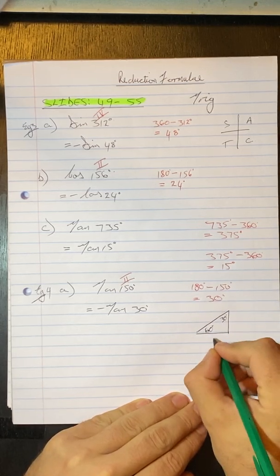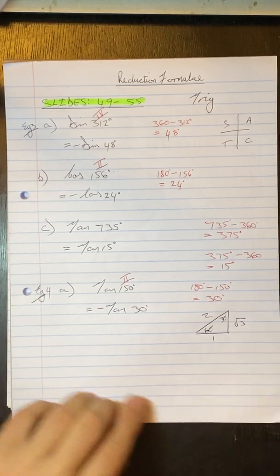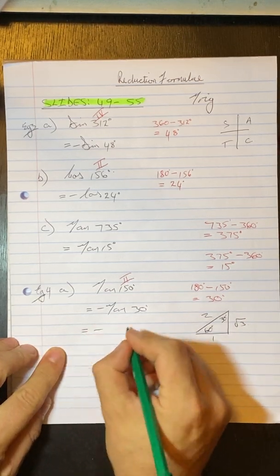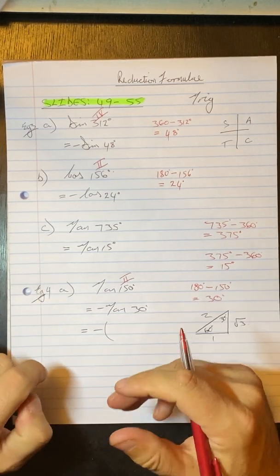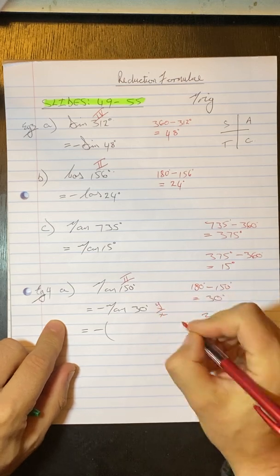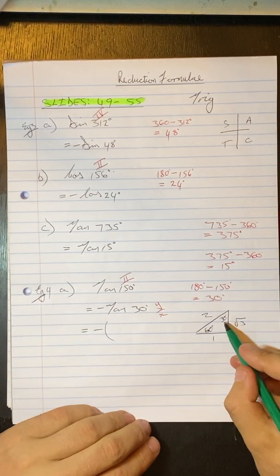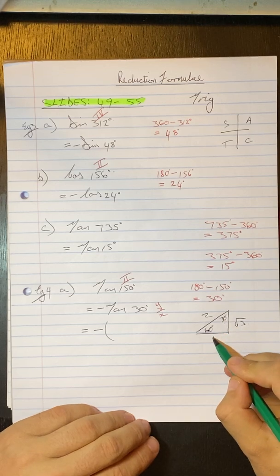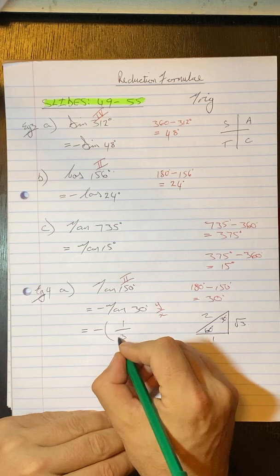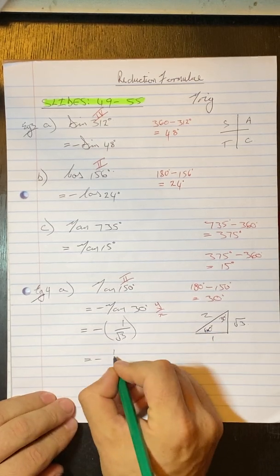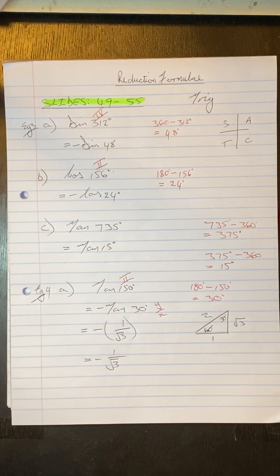60, 30, 1, 2 and root 3. So tan in terms of x, y and r is y over x which is opposite over adjacent. So we go to sine 30. So opposite would be 1 over adjacent would be root 3. So our final answer here is negative 1 over root 3.